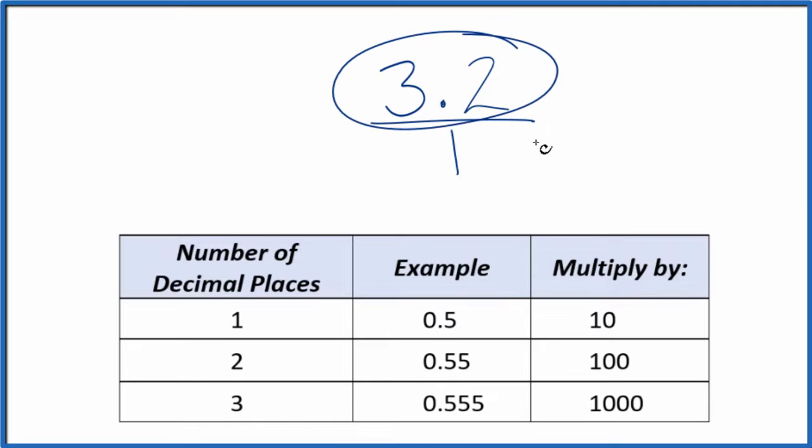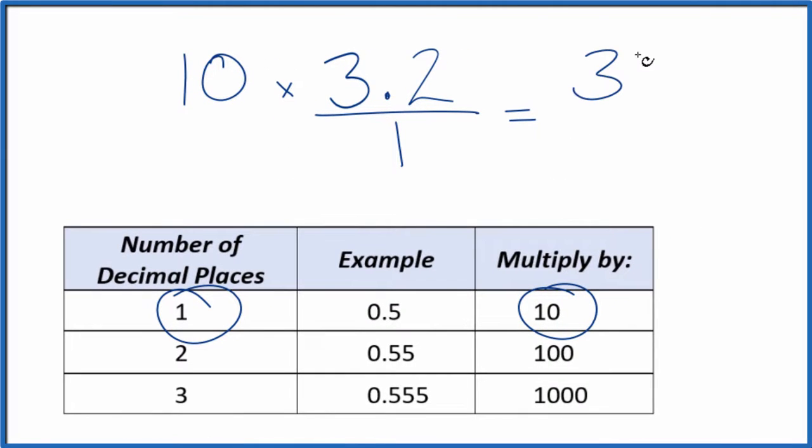If we can get the numerator here to be a whole number that would be a good start. So we have one decimal place here. One decimal place we're going to multiply that by 10. 10 times 3.2 that equals 32.